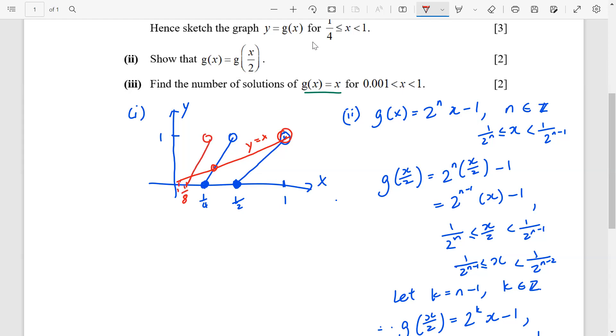Then, 1 over 16, there will be one more line here. It will get steeper and steeper. Each of these will have one intersection. So, your job is to find how many of it are there, within this range. And this one, is 1 over 1,000, x, 1.